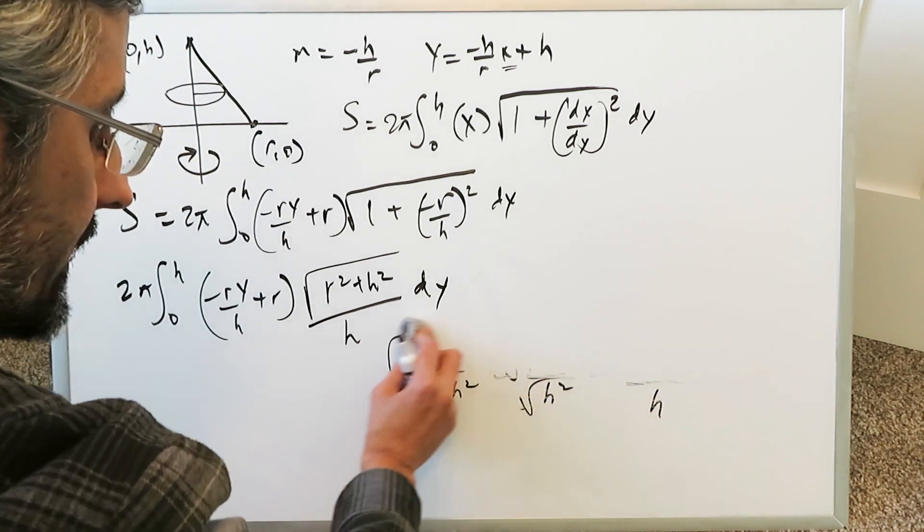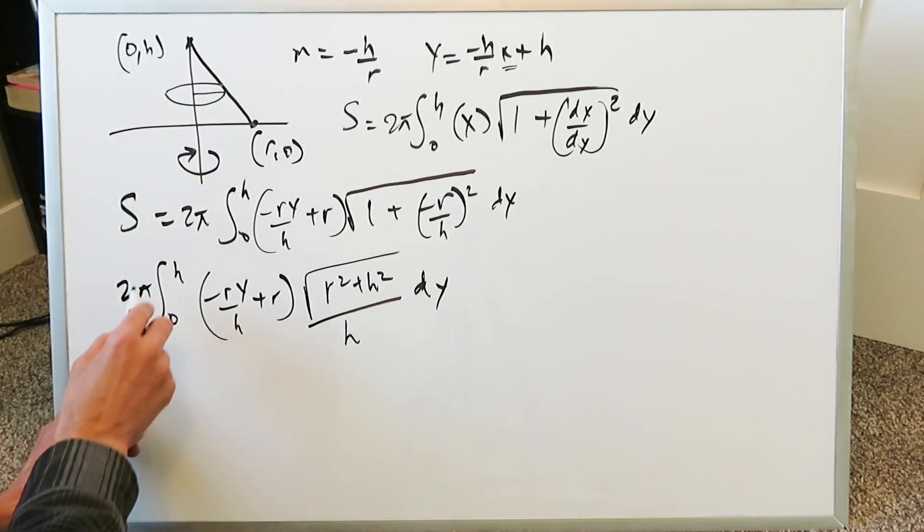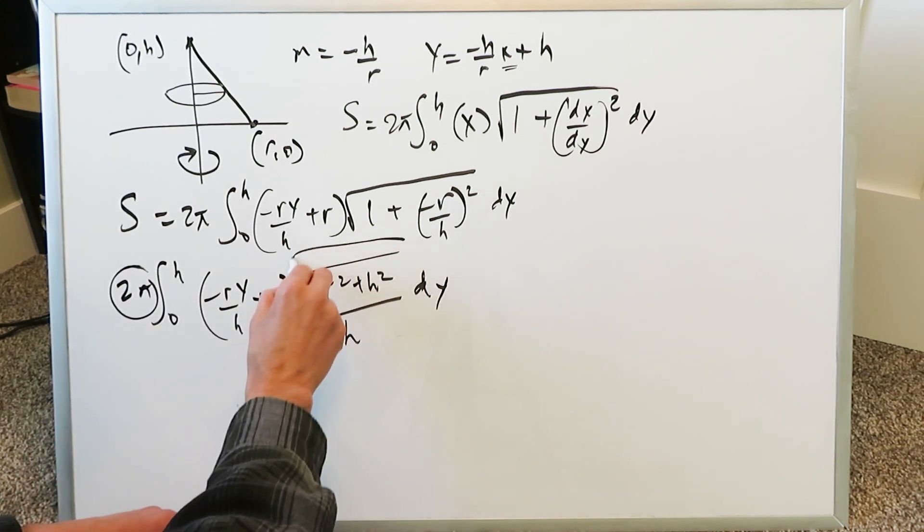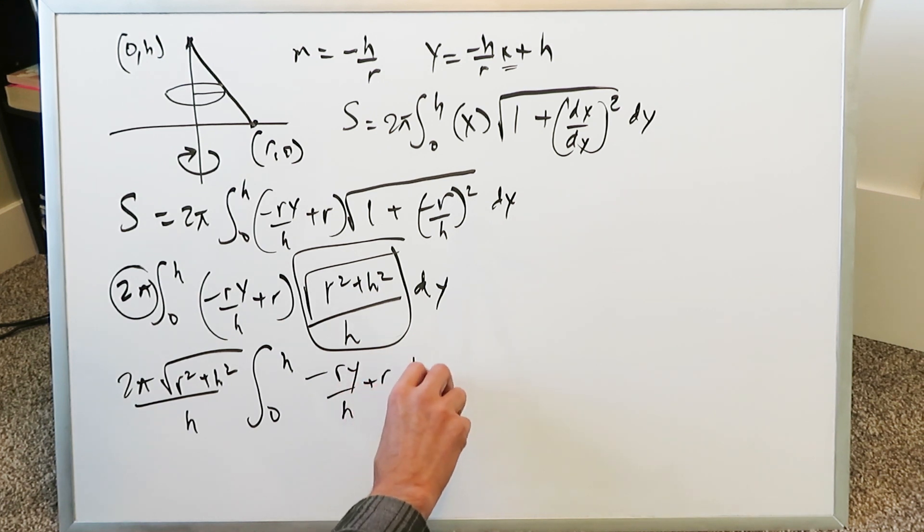And now things are beginning to take form. Now when you look at this, you're basically seeing this item out here. All of this can be treated as a constant and you can push it out. You will have 2 pi. You'll have here a radical with r square plus h square all over h. And then you can do your integral sign. This becomes your actual integrand which will be affected with regards to dy. And you can integrate this.